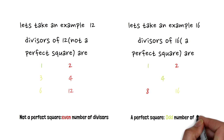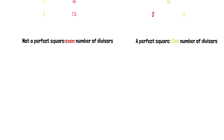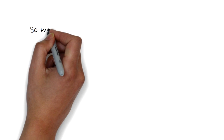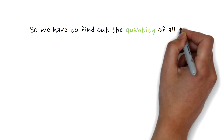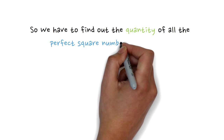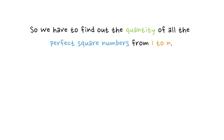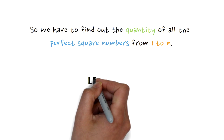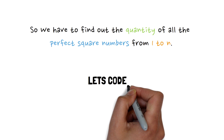We can observe that a perfect square number has an odd number of divisors. So in this question we basically have to find all the perfect square numbers from 1 to n, and that count will be our answer.